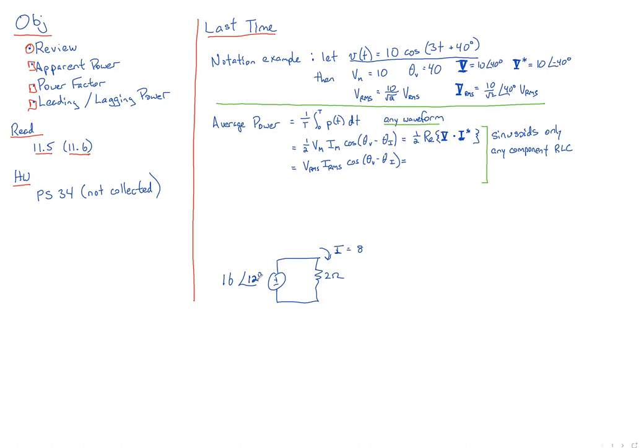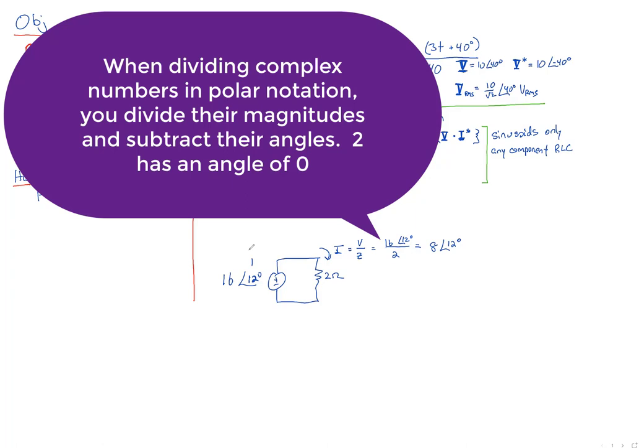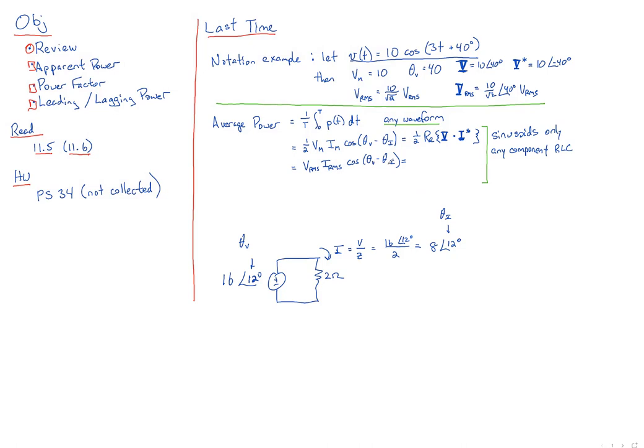Let's go back to how we figure out what current is in general. Current is equal to voltage over impedance. So our voltage here is 16 at an angle of 12. Our impedance is just 2. So what's the current? 8 at an angle of 12. So now this is our angle of our voltage. This is our angle of our current. What's the difference in the angle between them? 0. And we'll always have a 0 difference in this angle between voltage and current for any resistor. Just like we know it's going to be 90 degrees, either plus or minus 90 for a capacitor or an inductor.